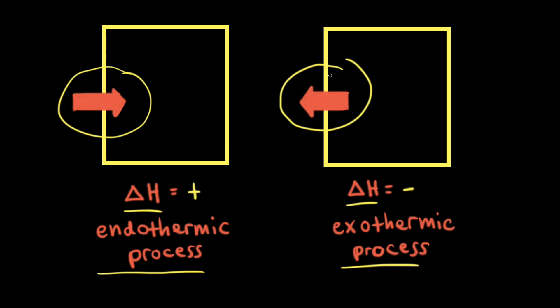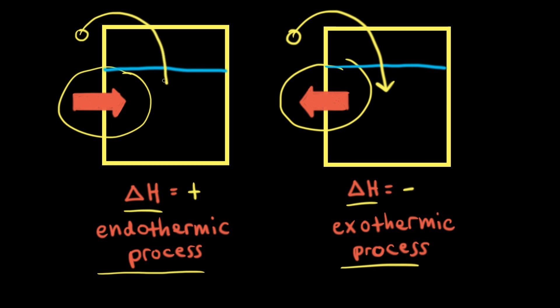Let's think about making a solution. Say we have a beaker full of water and we dissolve a solid in the water to form a solution. If the dissolution process is exothermic, the system releases heat to the surroundings; since the beaker is part of the surroundings, if we put our hand on the beaker and it feels hot, we know the dissolution is exothermic. If we dissolve a different solid and the beaker feels cold, that's because energy was transferred from the surroundings to the system — the surroundings lost energy — and so the dissolution of that solid is an endothermic process.